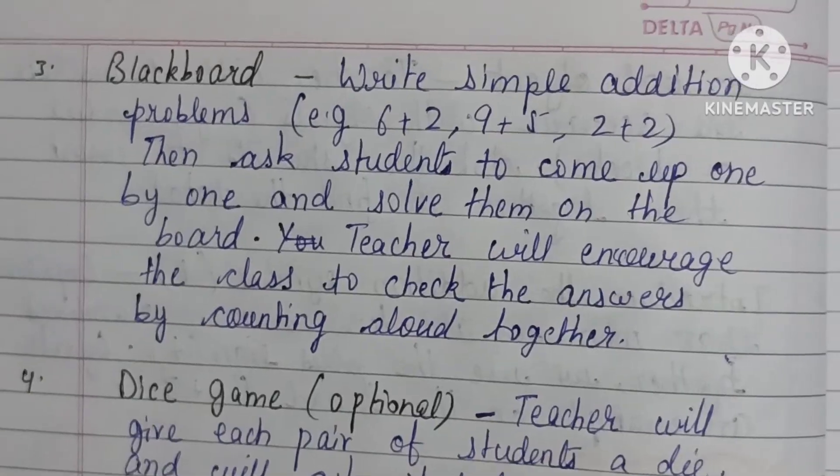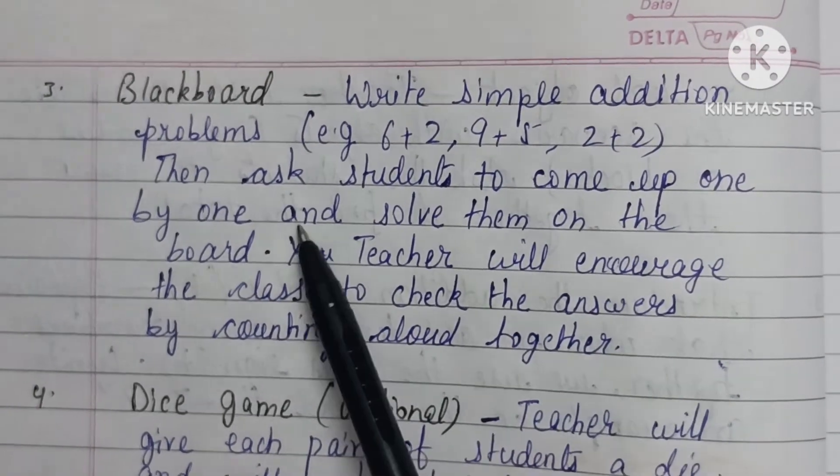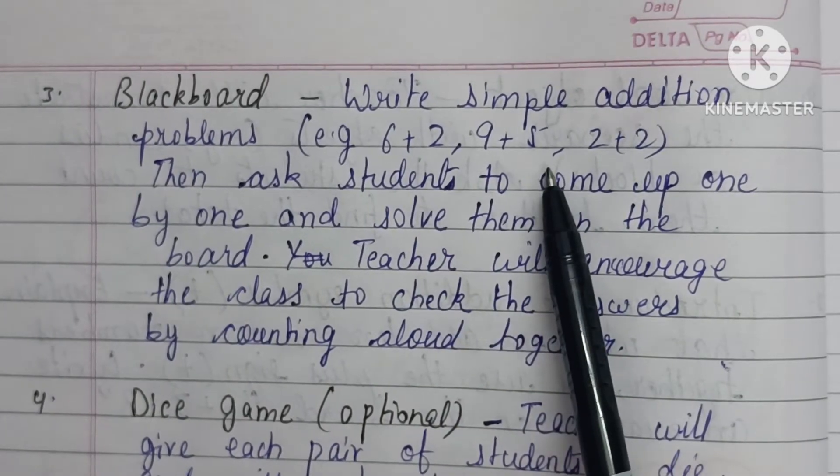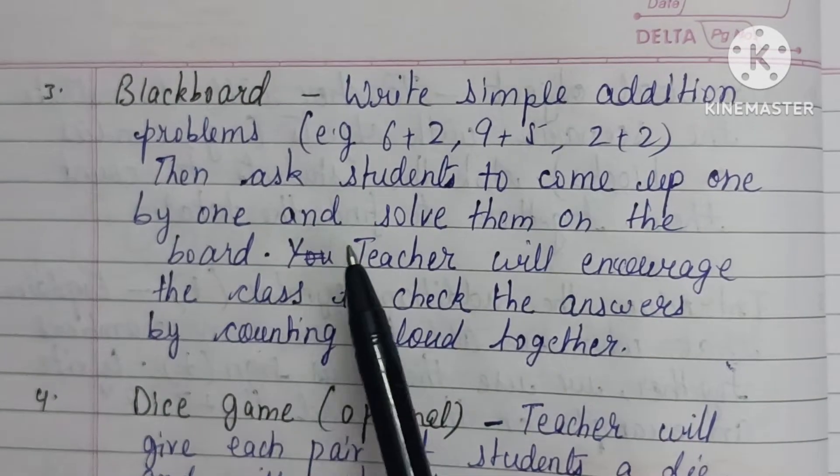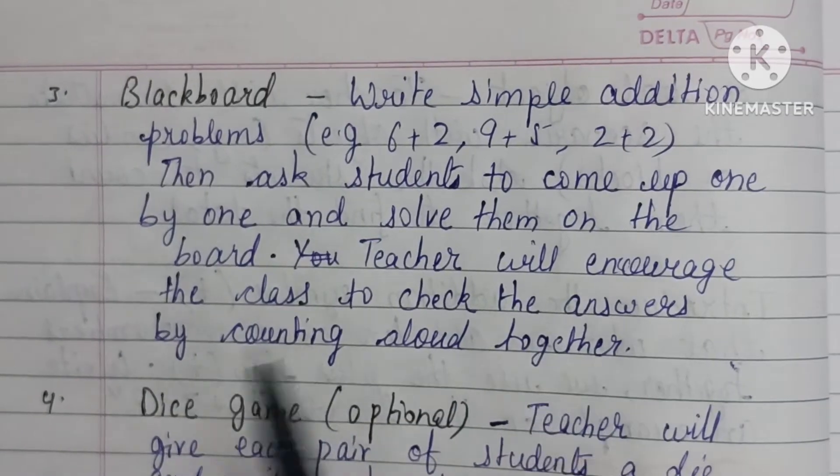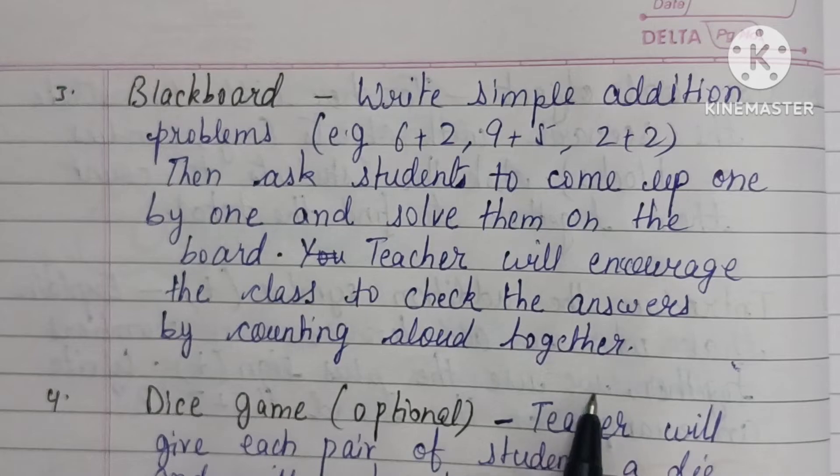Next is blackboard activity, in which you will write simple addition problems like six plus two, nine plus five, two plus two, and then ask students to come up one by one and solve them on the board. Teacher will encourage the class to check the answers by counting aloud together.